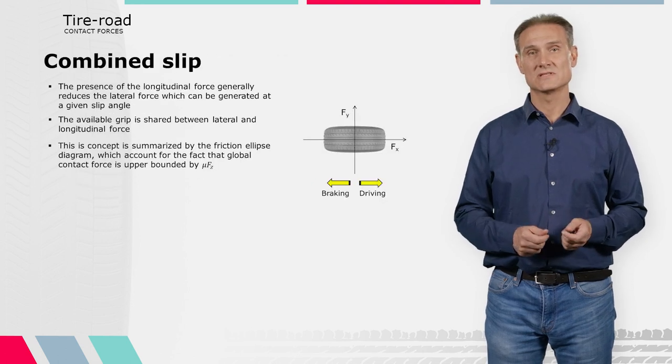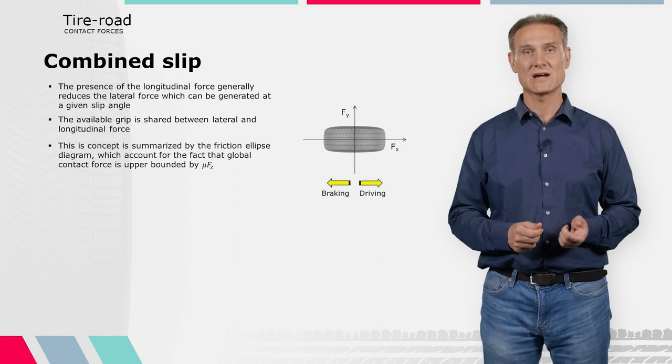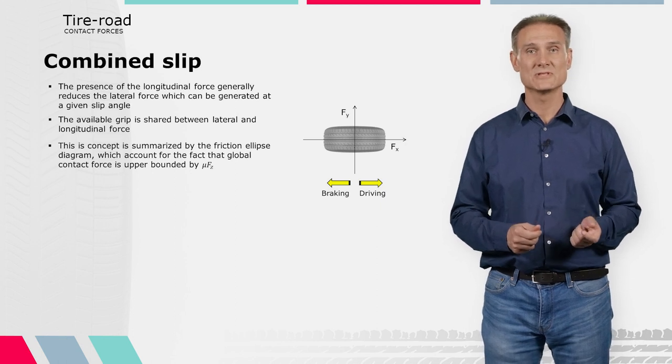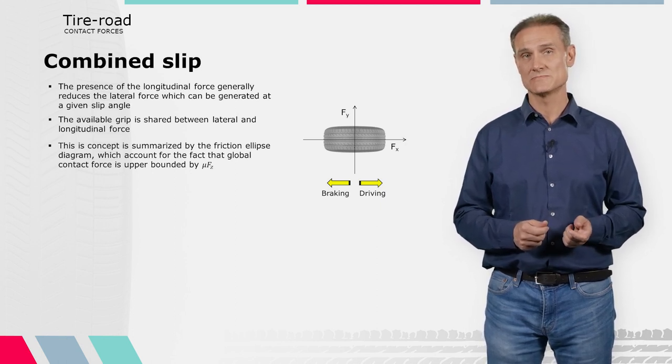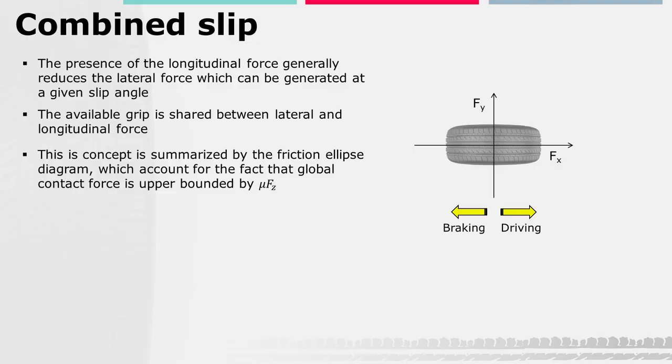Until now, in the discussion of the cornering force of a tire, the effect of the longitudinal force was not considered. However, lateral and longitudinal forces are often present at the same time, such as during braking in a turn. The presence of the longitudinal force reduces the lateral force which can be generated at a given slip angle, since the available grip is shared between longitudinal and lateral forces.